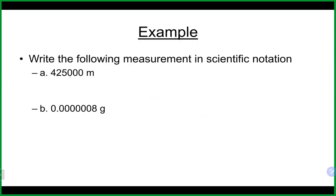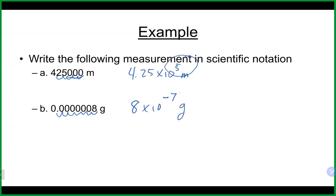These zeros at the front are not significant, so 4.25 times 10 to the 5 — those would be meters. And moving 7 places gives us 8 times 10 to the negative 7 — those would be grams. As we talked about: positive exponents mean larger numbers, negative exponents mean smaller numbers. That's a good way to remember whether your exponent should be negative or positive.